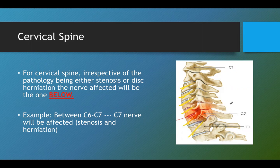As we can see in this picture, there is the level between C6 and the level between C7. As an example, the C7 nerve root — shown in red — would be affected, as the one passing below would be compressed. That is easy and simple for the cervical spine.